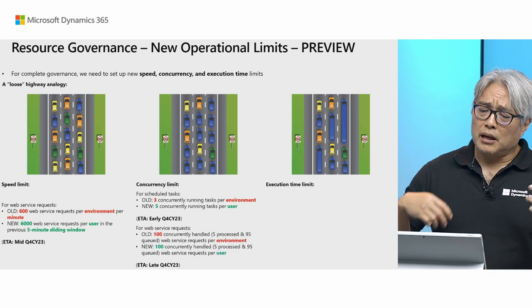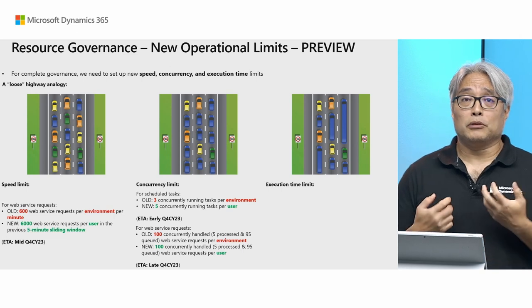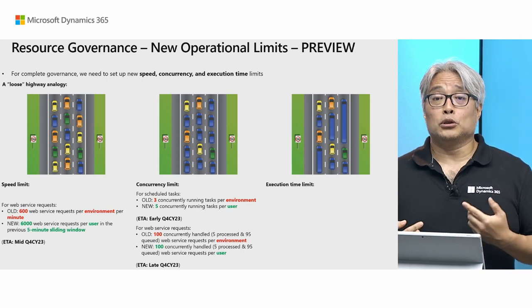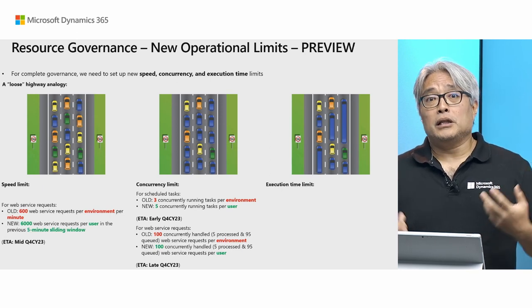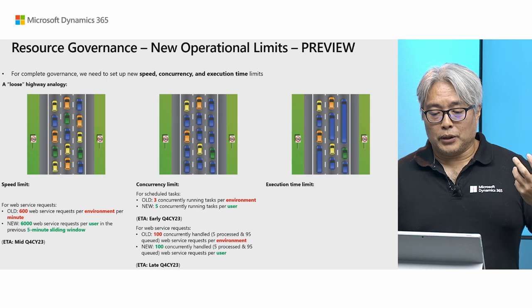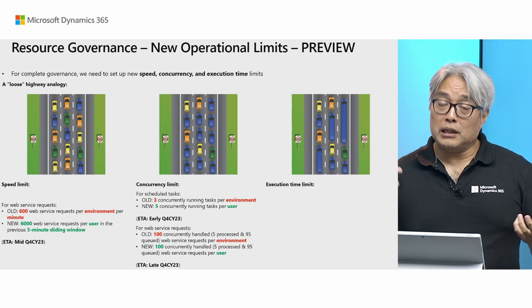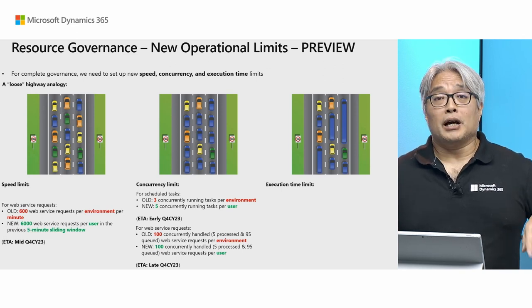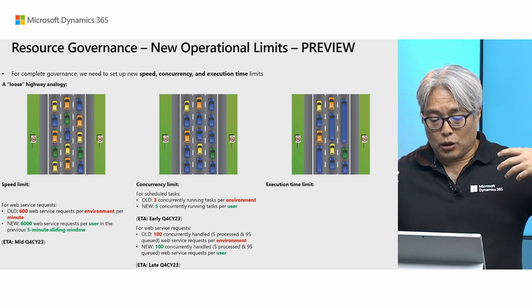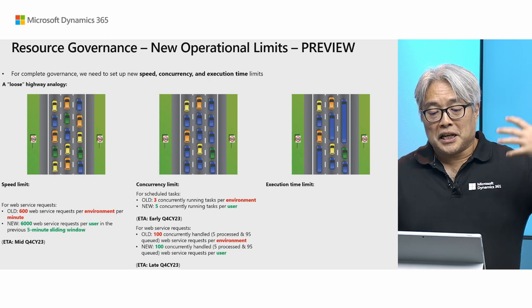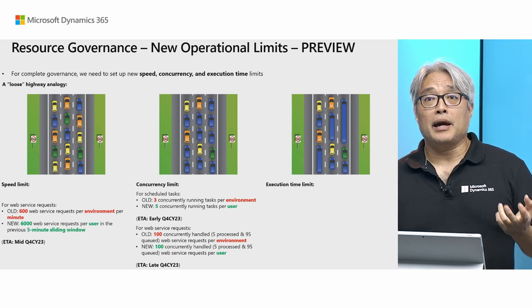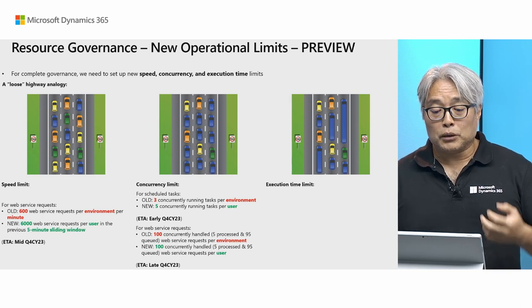Another concurrency limit we will introduce is also for web service requests. This time, we're not changing the number too much — what we're changing is the denominator. Before, we allowed only 100 concurrently handled web service requests — five processed and 95 queued — per environment. Now we're allowing it per user. So we're opening up parallel web service requests: 100 concurrently handled, five processed and 95 queued, but per user. When you have environments with more users, you get more throughput. That's the last improvement for this quarter, aimed at the end of the quarter.